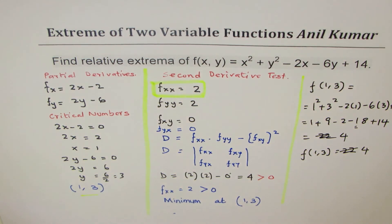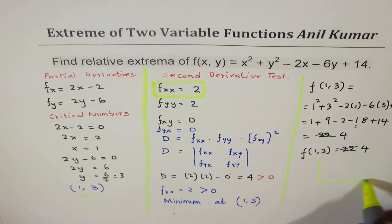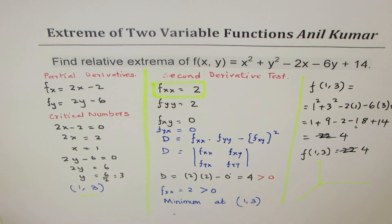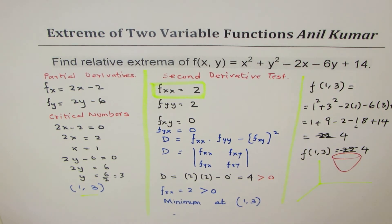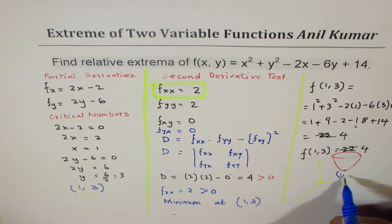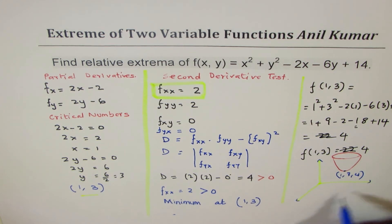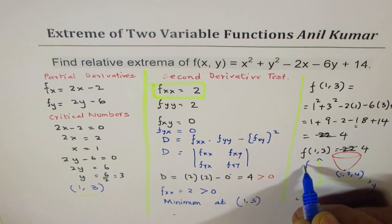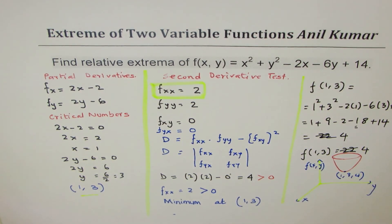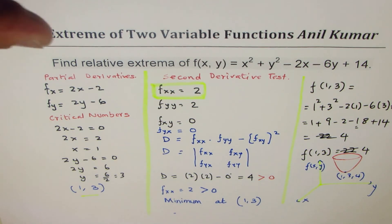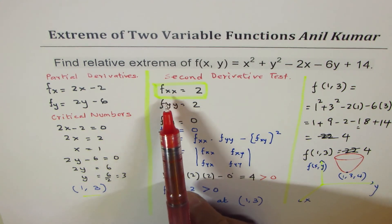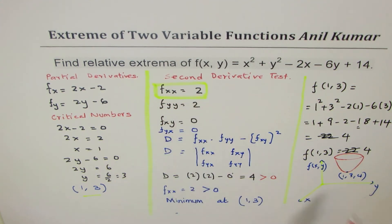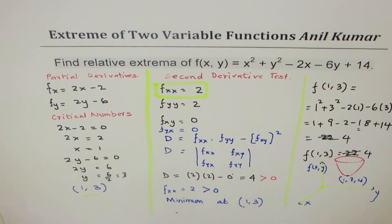If you sketch this function, you have a minimum at the point (1, 3, 4), where x and y are the horizontal axes and f(x,y) is written as z. In this example, the second derivative D was positive and fxx was also positive, therefore we got a minimum.